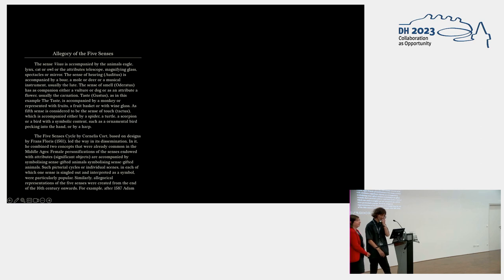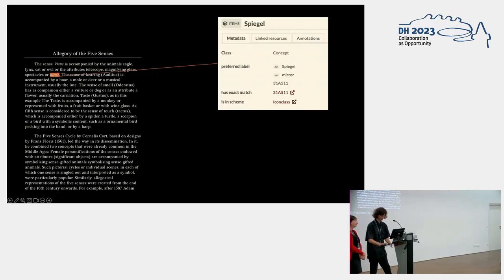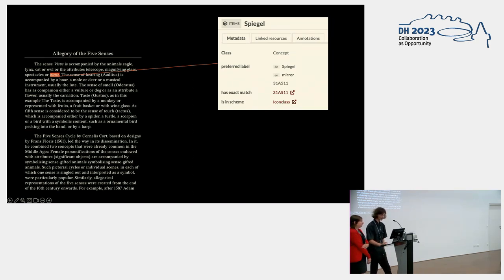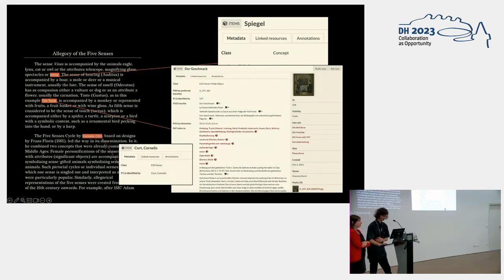With that as a reference, we started to develop a framework where the art historian in our team, Sabine de Gunter, could write different essays — in this case the example of the allegory of the five senses in our collection — and link a specific part of the text with entries in our semantic database. For example, a term such as 'mirror' in the text could be linked to the related vocabulary entry we use — in this case 'Spiegel' in the Iconclass notation system — and therefore to all the items in the collection connected with that vocabulary entry. The paintings mentioned in the text could be linked to the objects in the collection, as well as people, places, and much more.